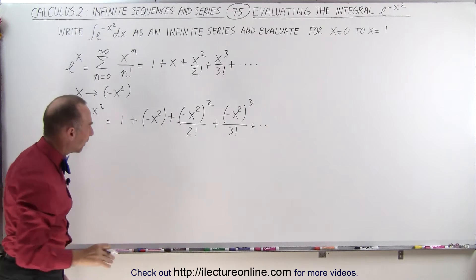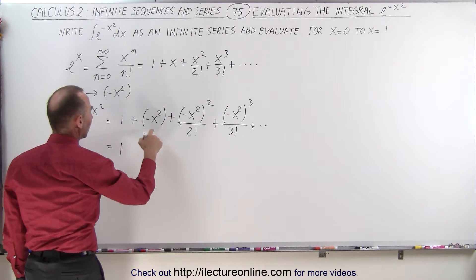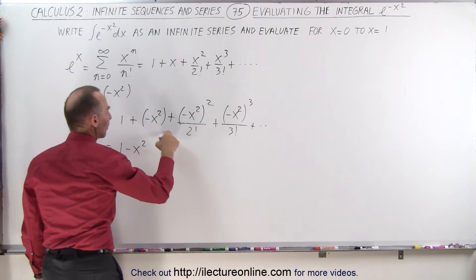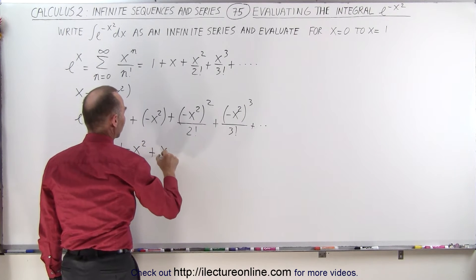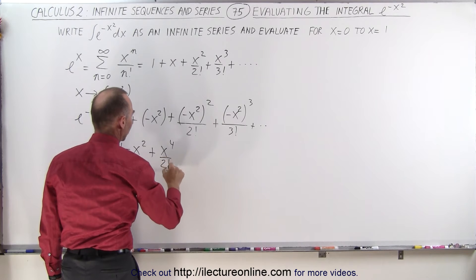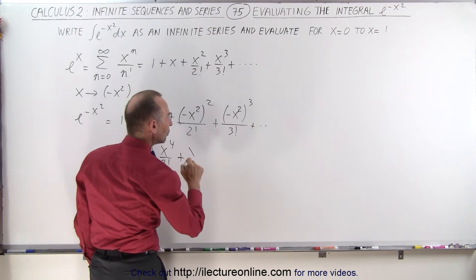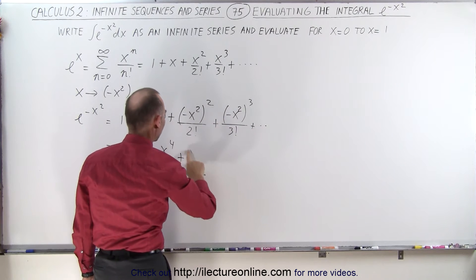Now, let's clean it up a little bit. This is equal to 1, and here we have minus x squared. Here we have plus x to the fourth over 2 factorial, and here we have plus x to, let's see here, that would be, nope, not plus,